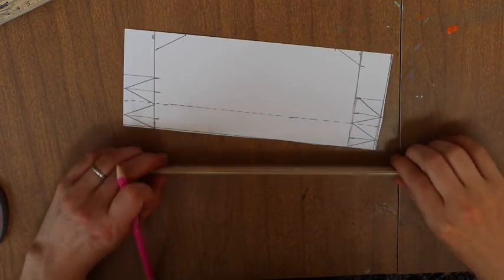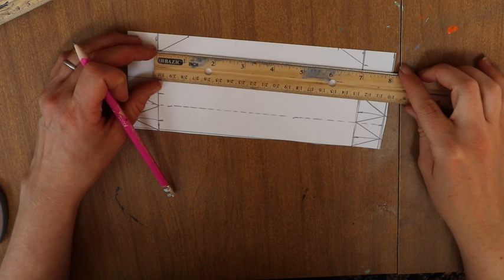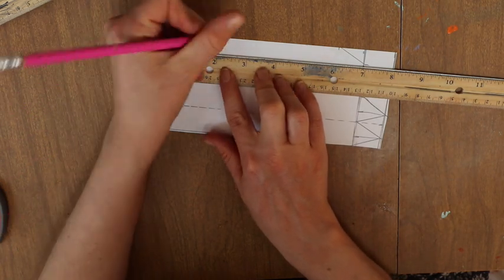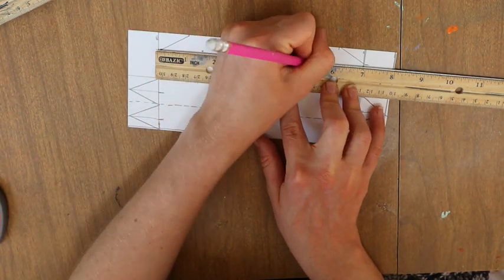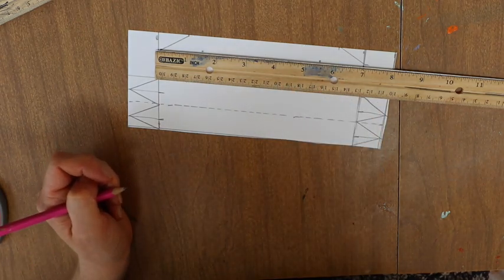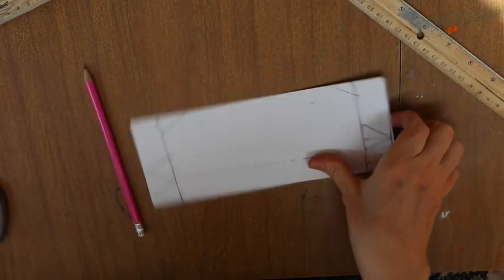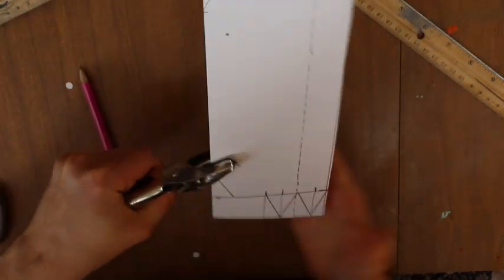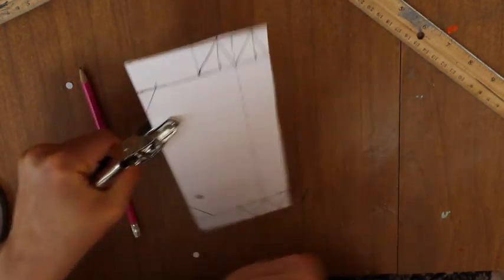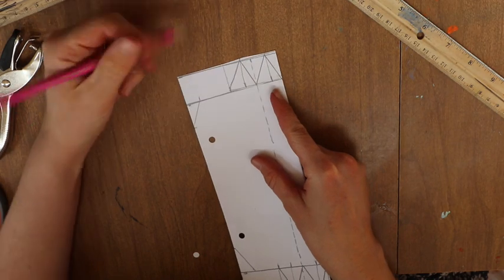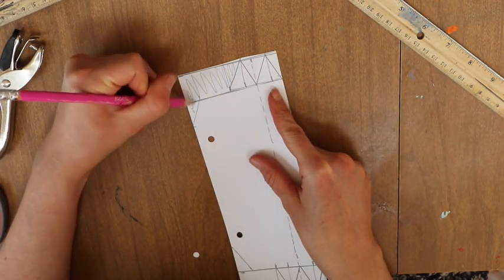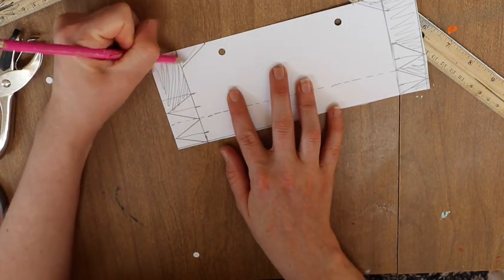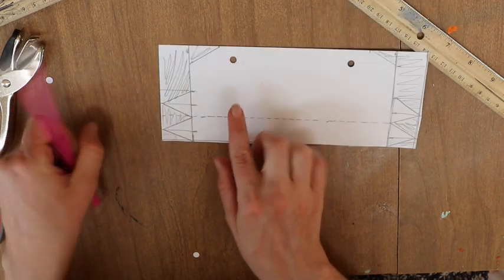Now we're going to hold the ruler on those one half inch marks and we're going to place a dot at one and a half and five and a half inch for holes. All right, so now what I'm going to do is punch out these holes here. Then we're going to cut on either side. So we're going to cut all of this stuff.